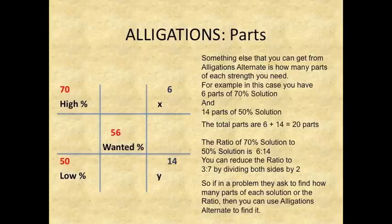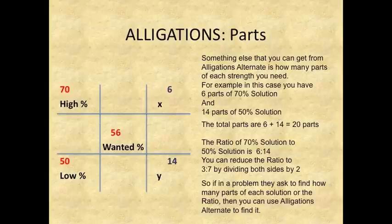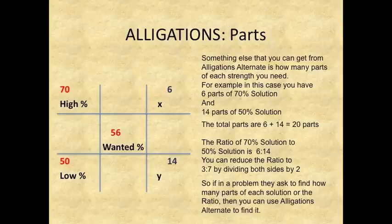Something else you can get from allegations alternate is how many parts of each strength you need. In this case you have 6 parts of 70 percent solution and 14 parts of 50 percent solution; the total parts are 6 plus 14, which equals 20 parts. The ratio of 70 percent to 50 percent solution is 6 to 14, which reduces to 3 to 7 by dividing both sides by 2.